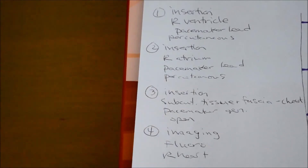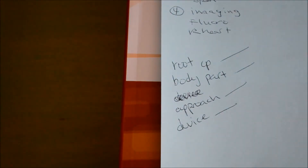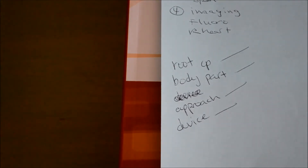The second code is insertion of a pacemaker lead in the right atrium, also a percutaneous approach. The third code is insertion of a pacemaker generator in the subcutaneous tissue and fascia of the chest, with an open approach. The fourth code is going to be in the imaging section of the code book — a fluoroscopic guidance on the right side of the heart. In our summary we already identified the root operation, body part, approach, and device, so now we just have to find the right table and place the correct characters.